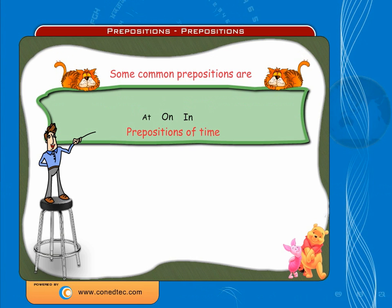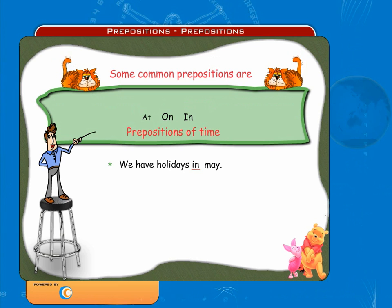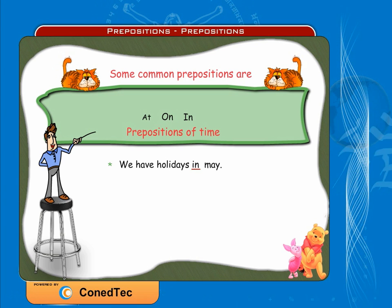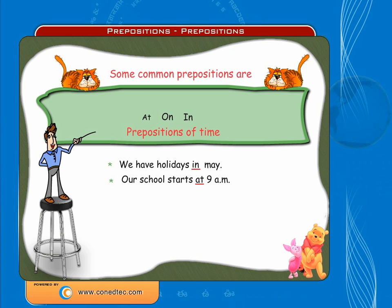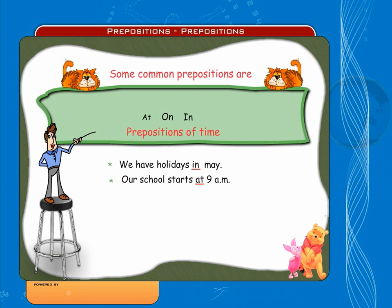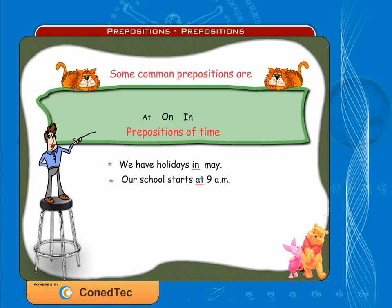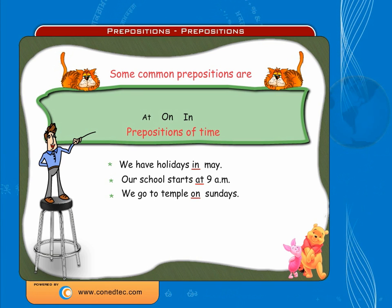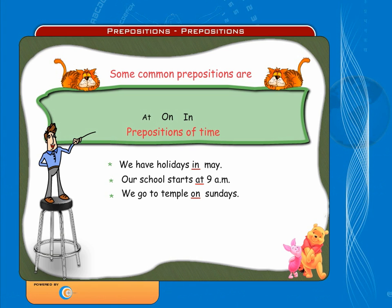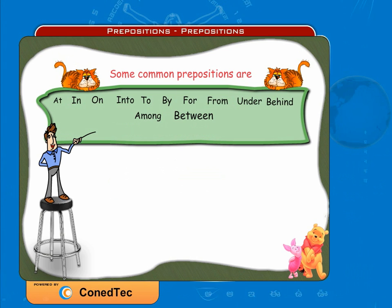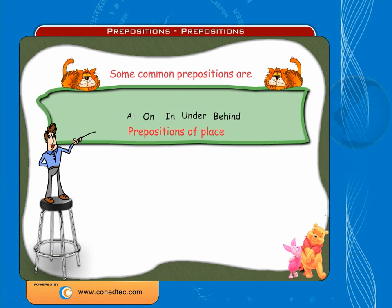Example: We have holidays in May. Here the word 'in' is a preposition. Our school starts at 9 a.m., where 'at' represents the preposition. We go to temple on Sundays. Here 'on' represents the preposition. At, on, in, under, and behind are prepositions of place.